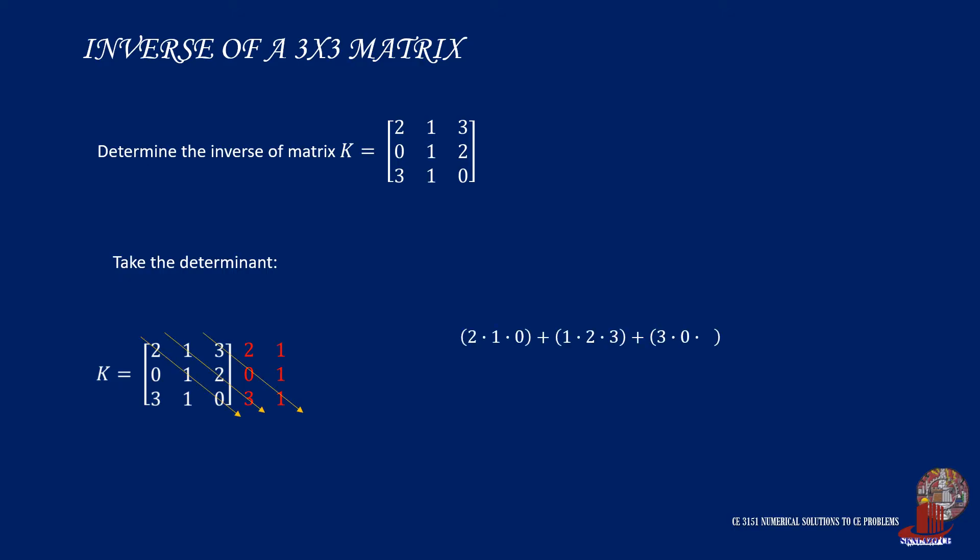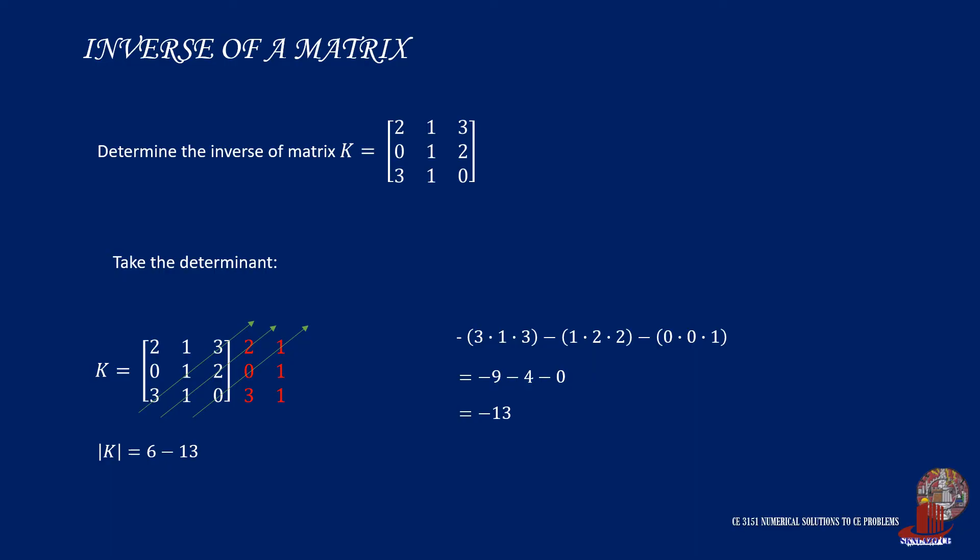The positives will then be solved as 2 times 1 times 0 plus 1 times 2 times 3 plus 3 times 0 times 1, which can then be simplified as positive 6. The negatives will then be taken as negative of 3 times 1 times 3 less 1 times 2 times 2 less 0 times 0 times 1, which would be taken as negative 1 less 4 less 0, or that would be negative 13. Thus, the determinant for matrix K is 6 less 13, or negative 7.